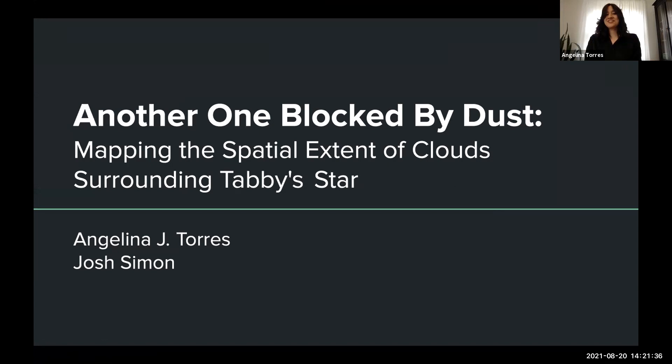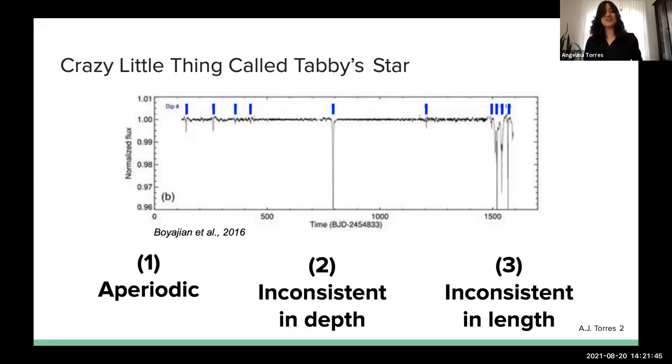Thank you so much for the introduction. I'm really excited to talk to you all about my research today. But first, I need to give you a little bit of context about this crazy little thing called Tabby's Star. Now, back in 2016, the Kepler telescope discovered a star in the Cygnus constellation which showed aperiodic dips in flux that were inconsistent in depth and inconsistent in length.